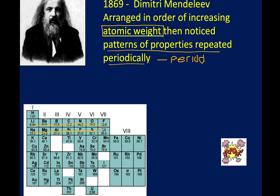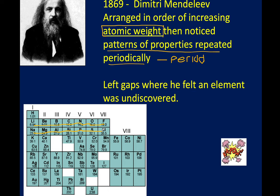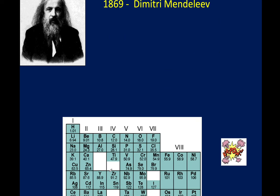The next thing Mendeleev did, which was very clever compared to all other scientists, was that he left gaps — because the elements surrounding the gap suggested something belonged there. You saw that with eka-aluminum. For example, the properties of titanium did not fit in group 3 but did fit in group 4, so he placed them in group 4.